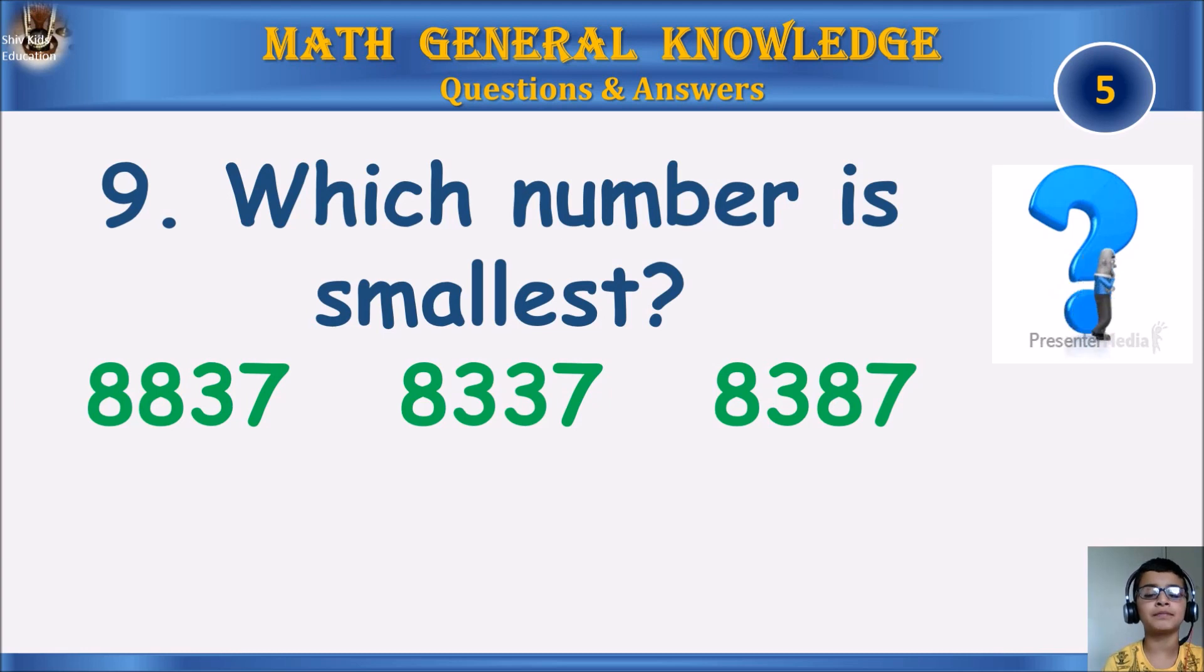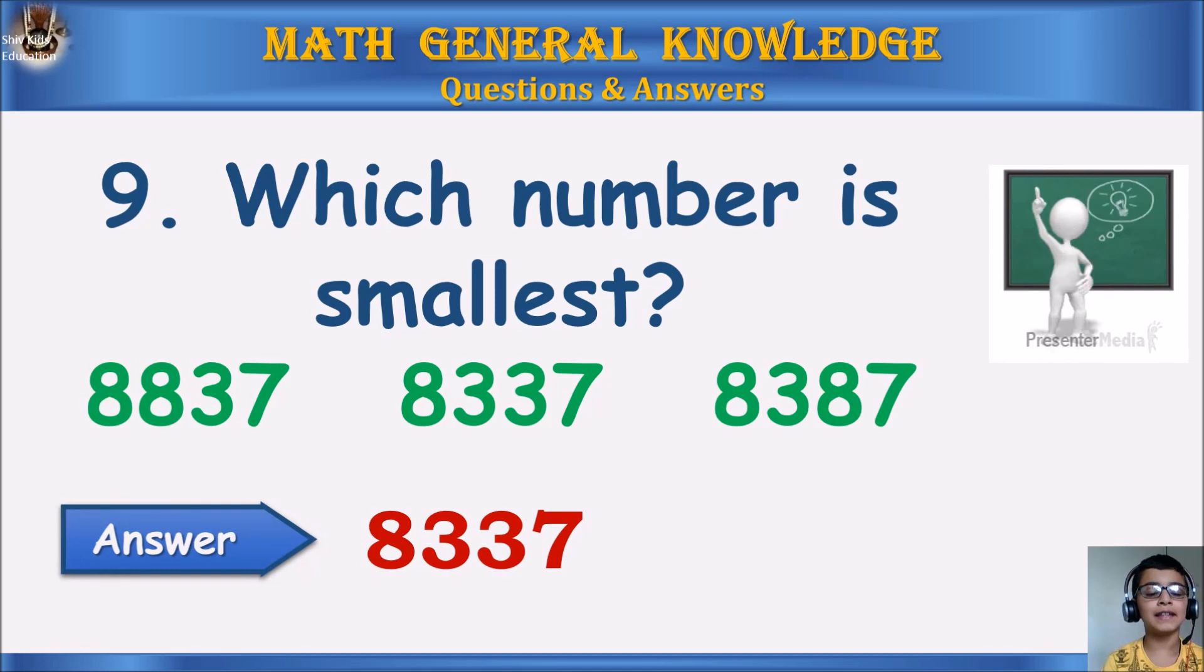Question 9: Which number is smallest? 8,837, 8,337, 8,387. Your time starts. The answer is 8,337.